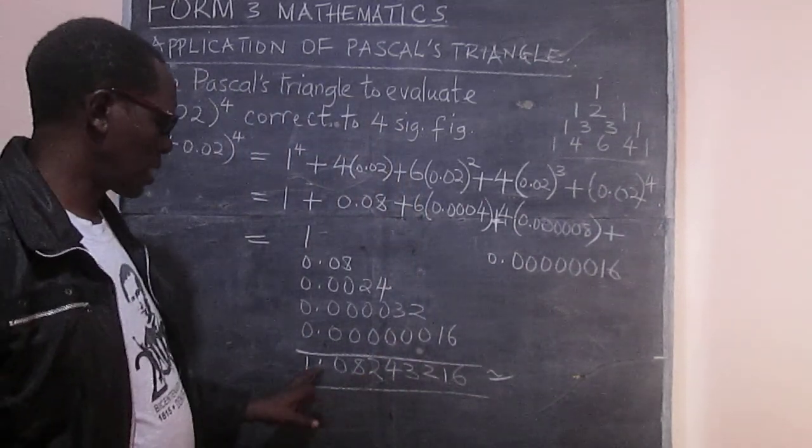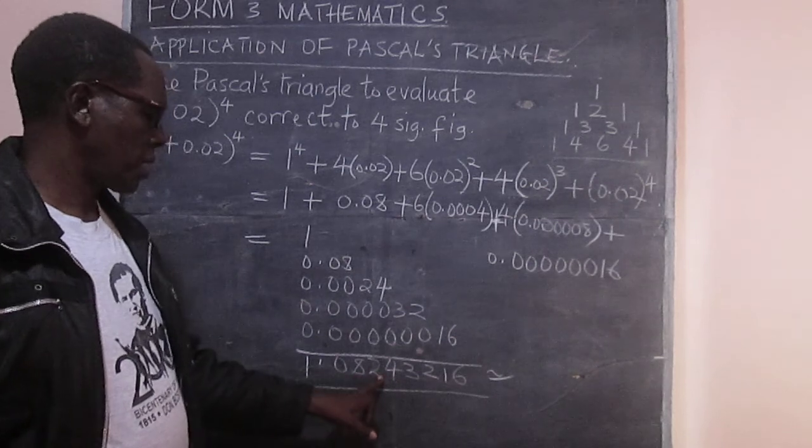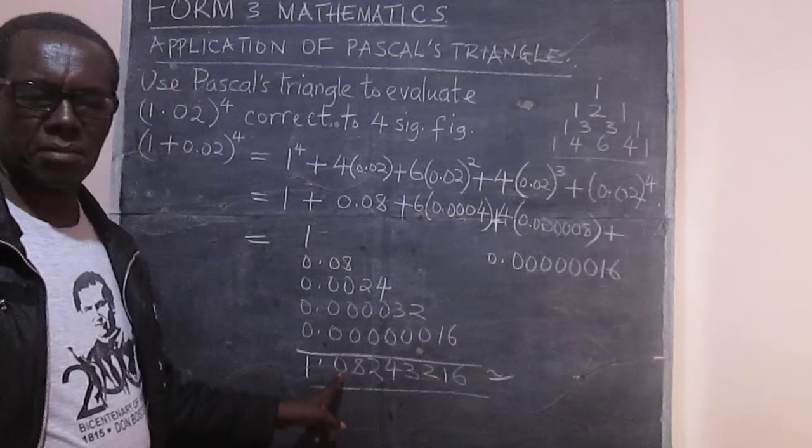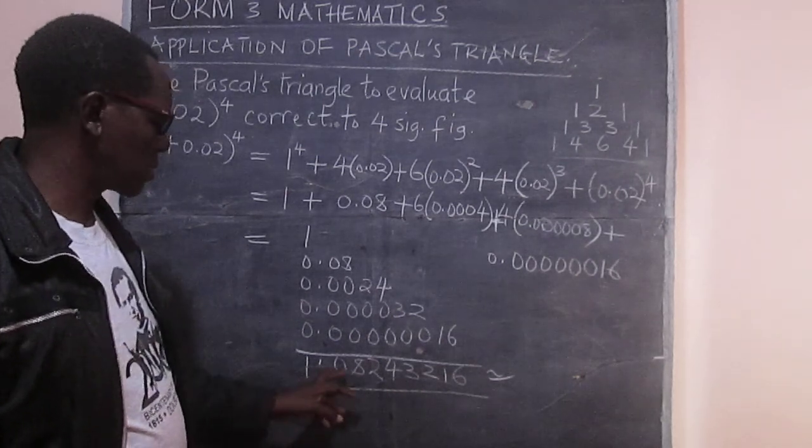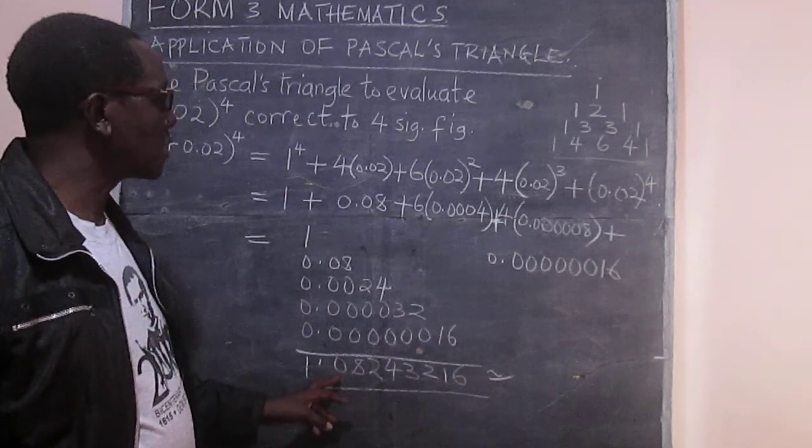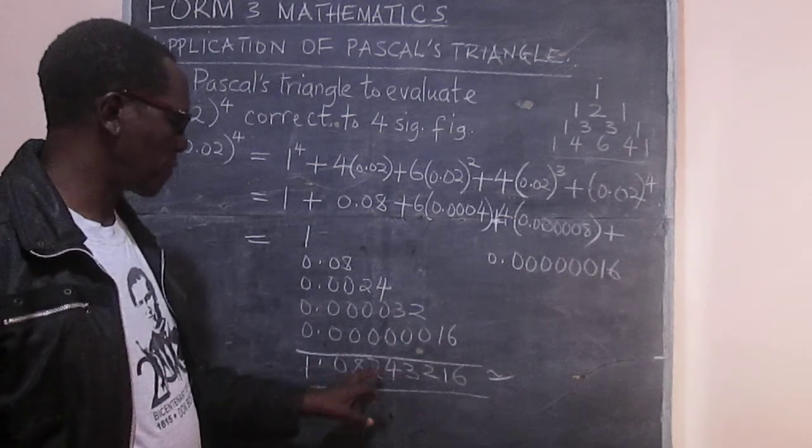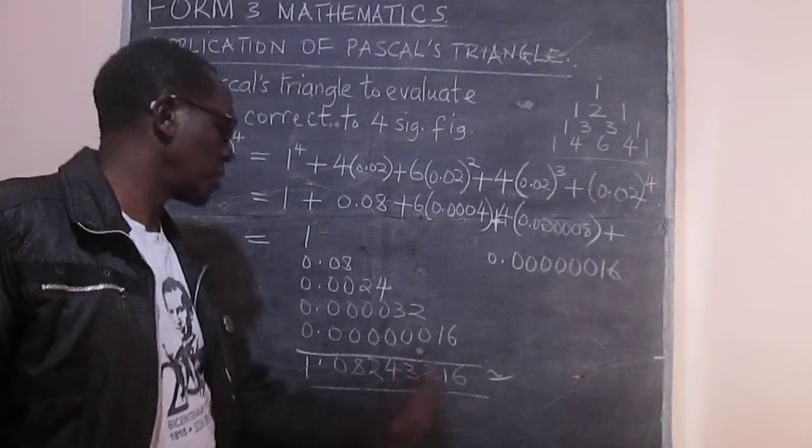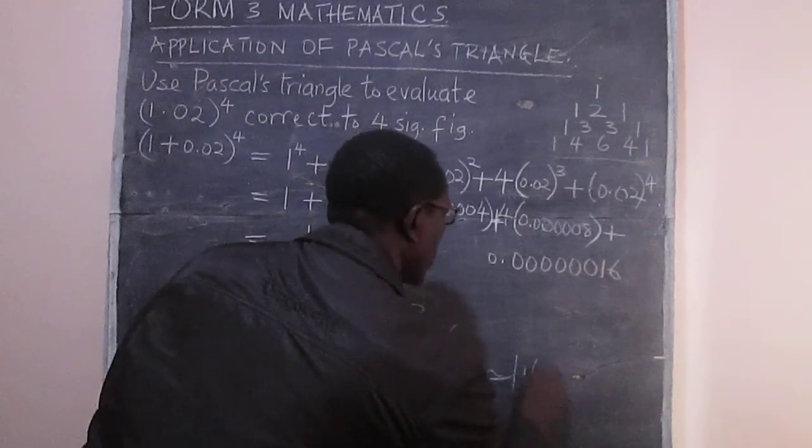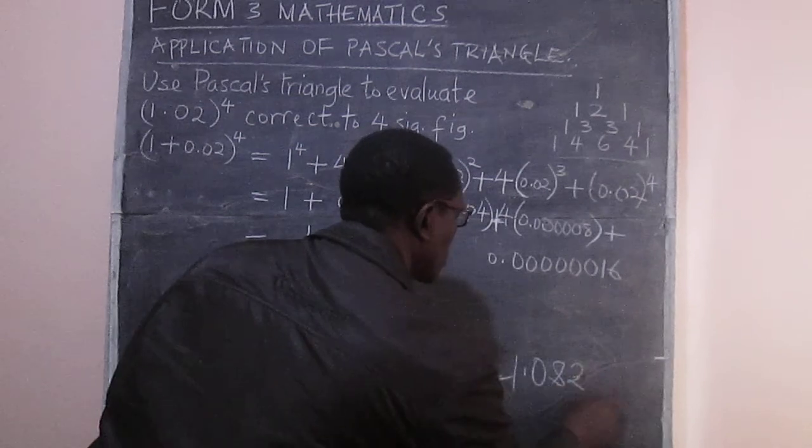Now count 1, 2, 3, 4. Now this 0 here is significant because it is between 1 and 8. And therefore, we need to count 4 significant figures. So 1, 2, 3, 4. Look at this, and it's less than 5. Therefore, that part can be ignored now. And we have 1.082.